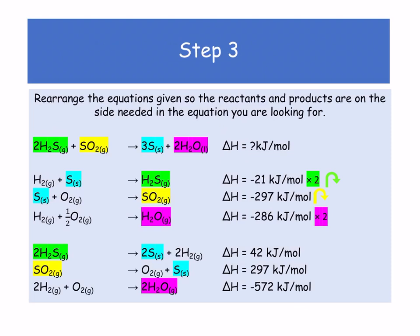Our next equation — equation number 2: sulfur plus oxygen gives us SO2. Our sulfur is on the wrong side, so we're going to flip that equation, giving us SO2 going to O2 plus S. It's gone from negative 297 to positive 297 kJ/mol. Our last equation: note we have a problem because there's only one H2O, but in our equation we want 2H2O. So we multiply everything in that equation by 2, and our delta H goes from negative 286 to negative 572 kJ/mol. In this case we didn't have to flip the last one.